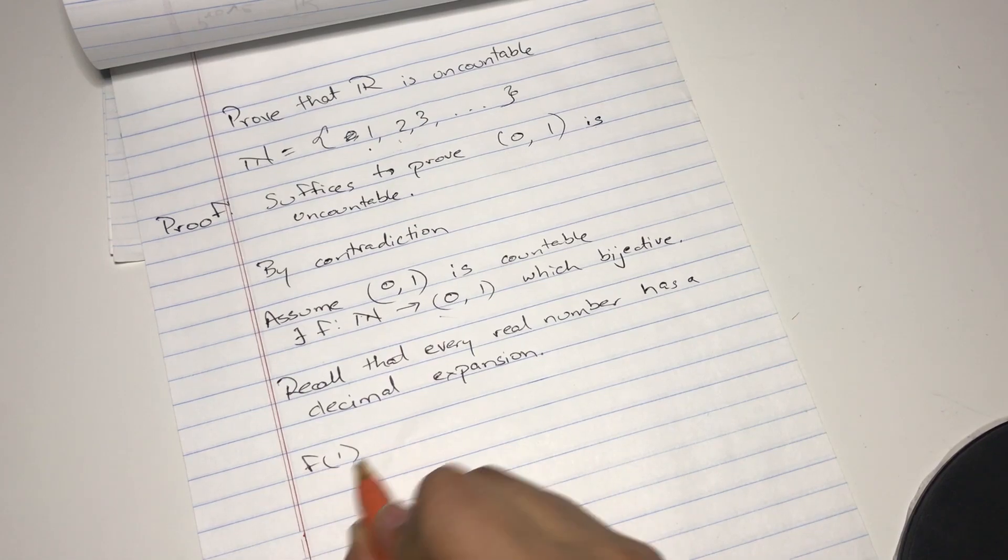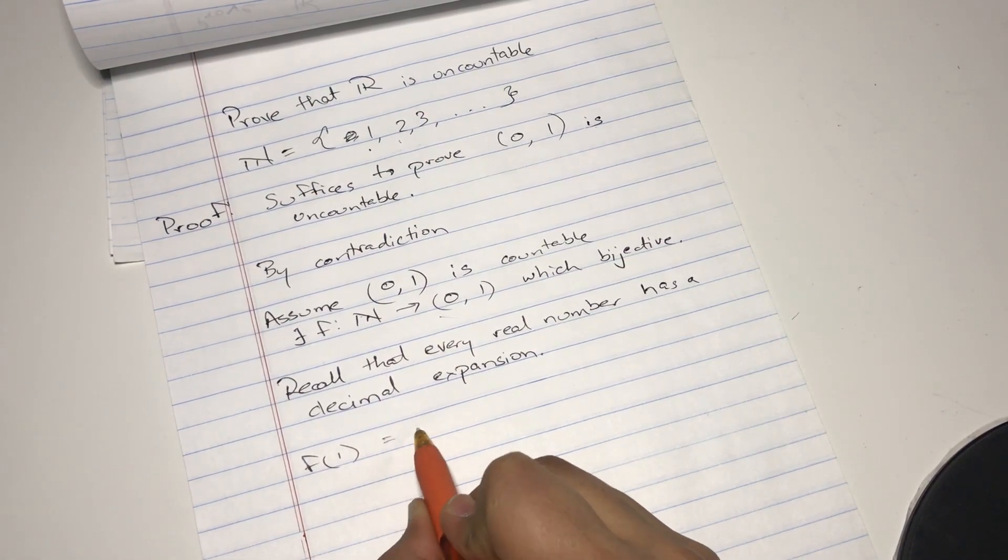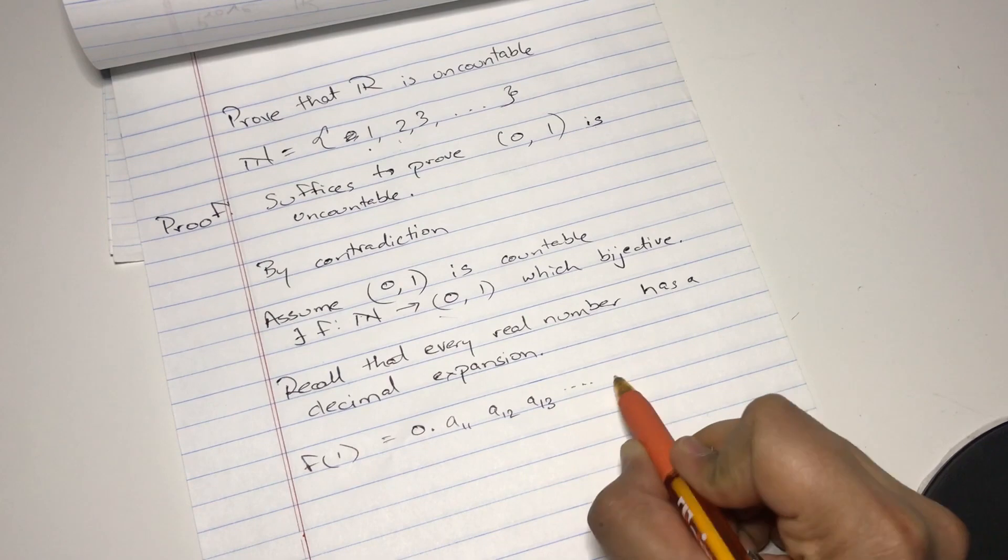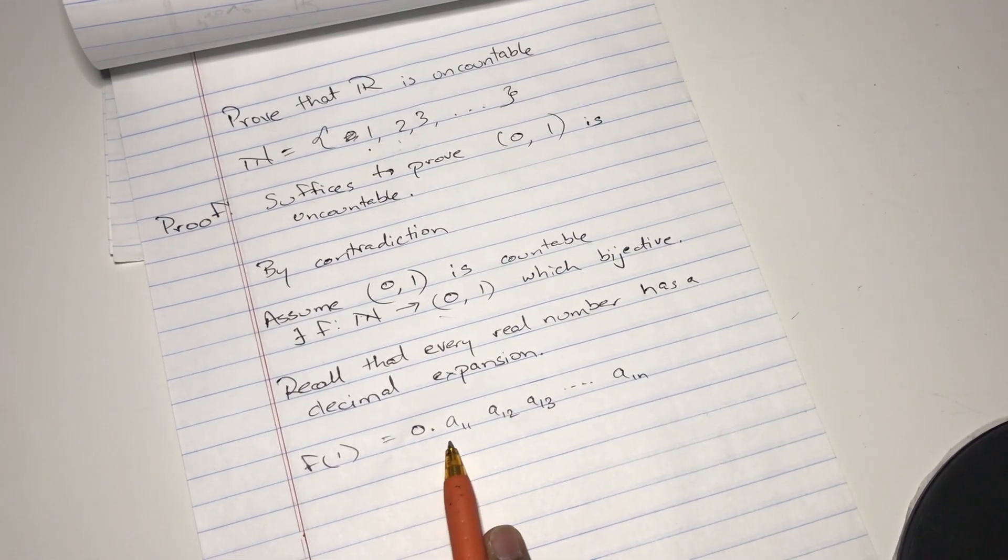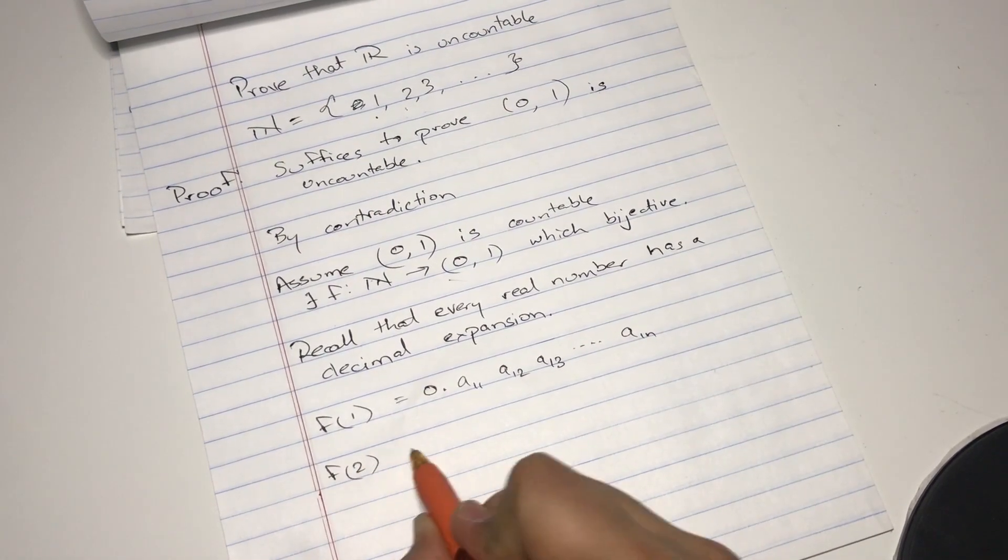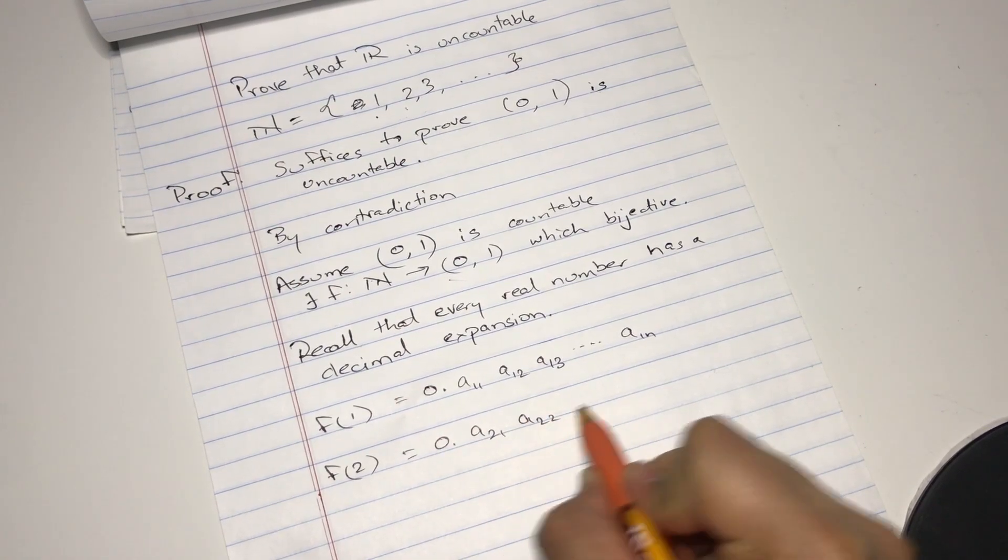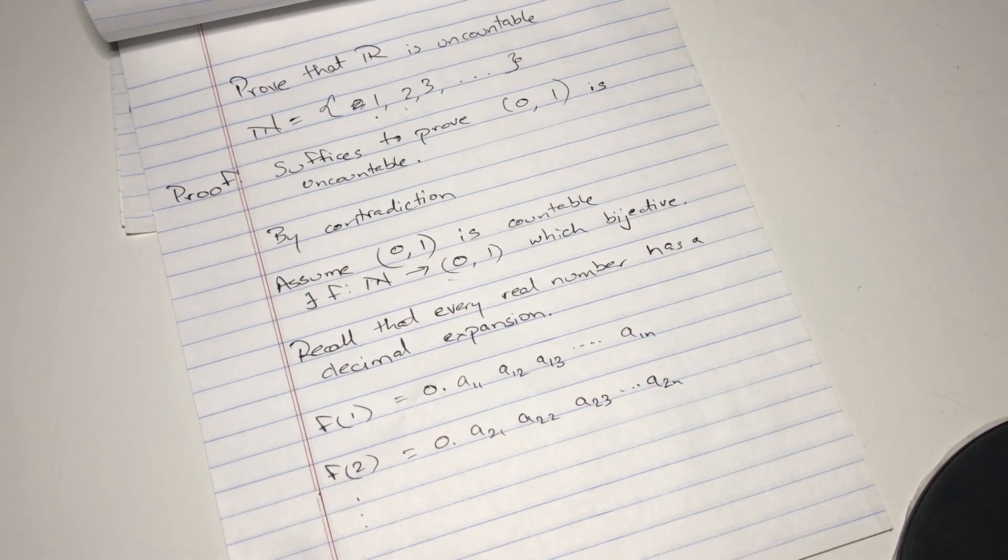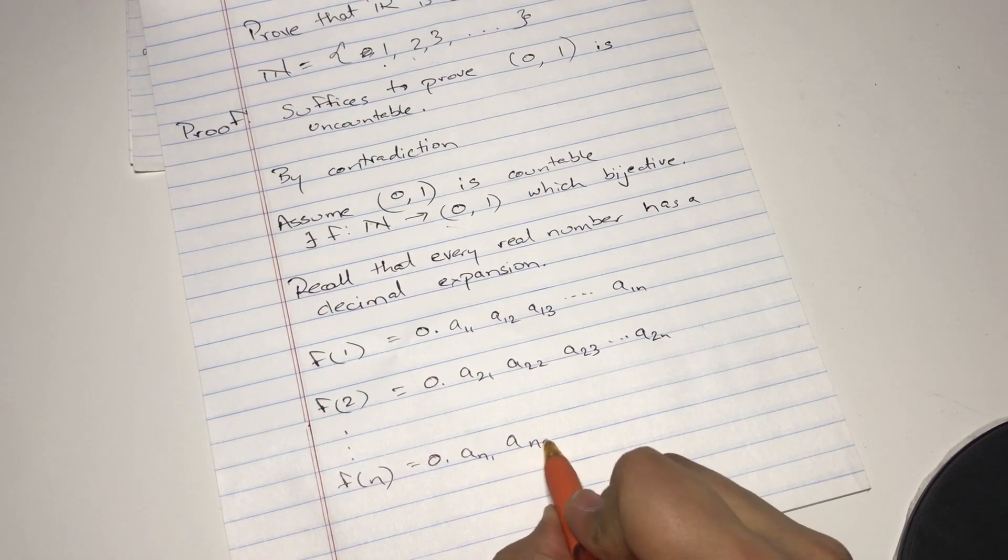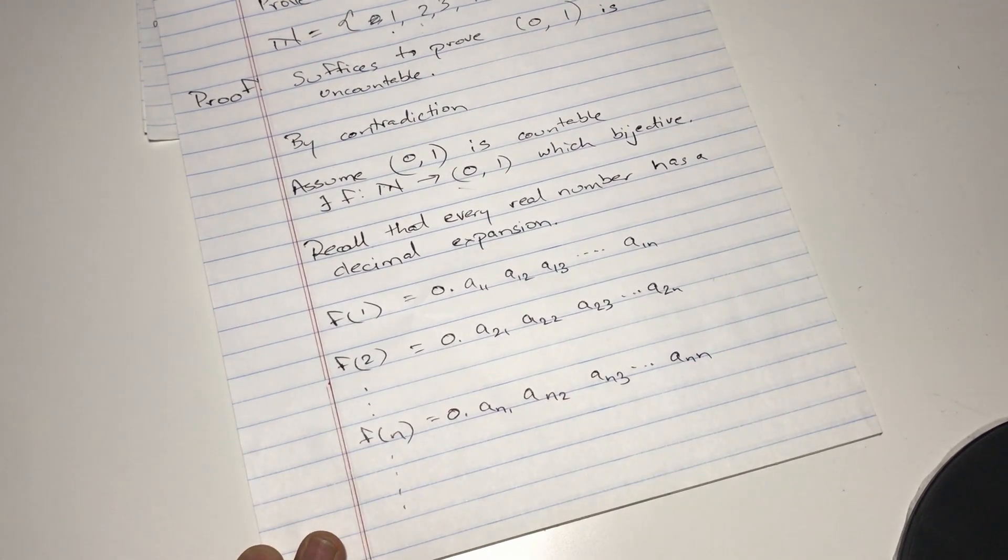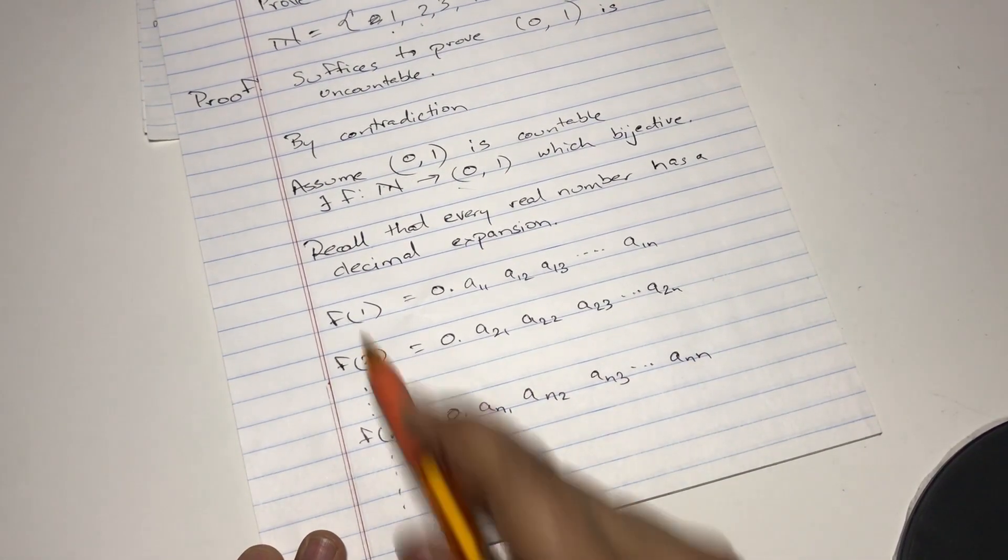So let's say the first element of this function f equals 0.a11, a12, a13 all the way to a1n. So this is just a number, it could be 0.573145 whatever. Let's say the second number f2 is equal to 0.a21, a22, a23, a2n, and this goes on until f of n, which is 0.an1, an2, an3, a2n, and it'll go on further from here because it will go on infinitely.